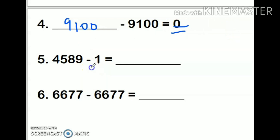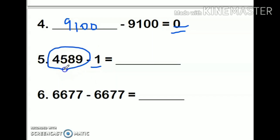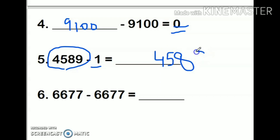Next: 4589 minus 1. Whenever I subtract 1 from any number, my answer is the number which comes before that number. So what comes before 4589? My answer is 4588.